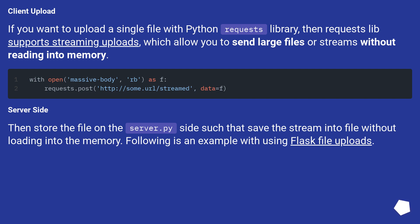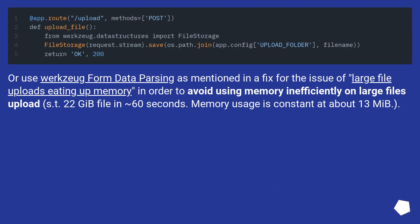Server side: store the file on the server.py side by saving the stream into a file without loading it into memory. Following is an example using Flask file uploads. You can also use form data parsing to avoid memory inefficiency on large file uploads — for example, a 2 GB file upload over 60 seconds with memory usage constant at about 13 MiB.